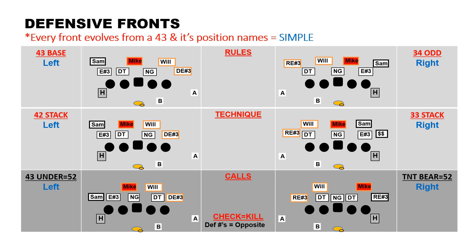When we do defensive front recognition, we want to communicate this consistently. Everything starts from some version of a 4-3. In the upper left you can see we're running to the left — Sam is strong, Mike in the middle, and Will weak. Down below in the 4-2 stack, when the Mike is not over the center, we say he is the linebacker stacked to the play side; so going left, Mike is over the left guard. In the bottom, a 4-3 under is where they kick the front weak away from the direction we're going — going left, they walk the Sam down over the H, and we have the backers stacked with the Mike in the A-gap.